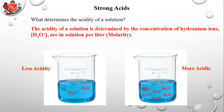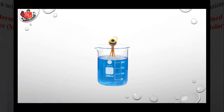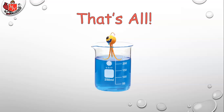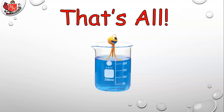A solution with more hydronium ions is more acidic than one with fewer, regardless of whether that comes from using a very strong acid or a large amount of a weak acid. Whatever the case, more hydronium ions means a more acidic solution. That concludes this lesson on strong and weak acids and bases. In the next lesson we'll get into the pH scale and how that works.